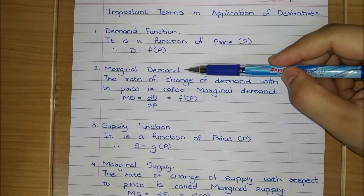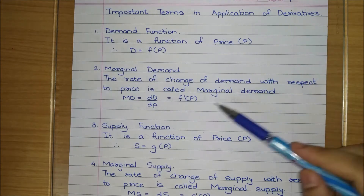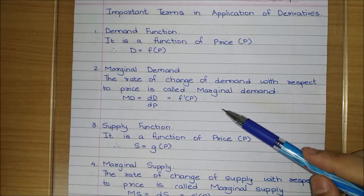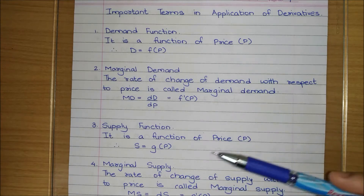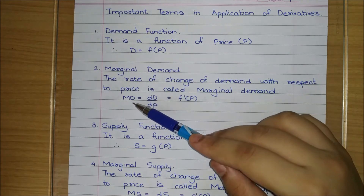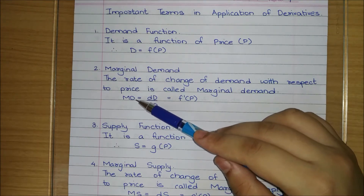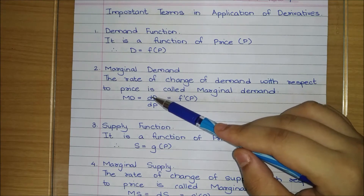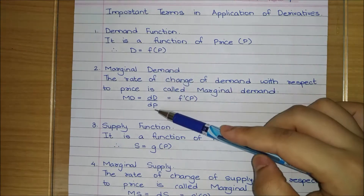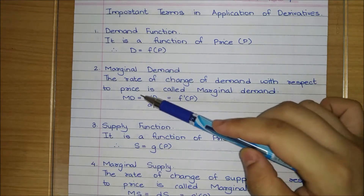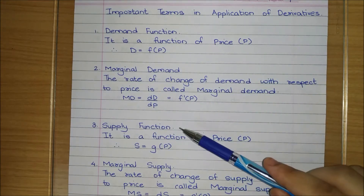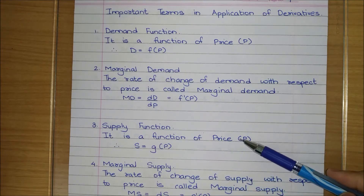Marginal demand is the rate of change of demand with respect to price — how fast demand increases or decreases as price changes. To find this, we differentiate demand with respect to price. Since demand is a function of price, differentiating it with respect to that independent variable gives us the marginal demand.